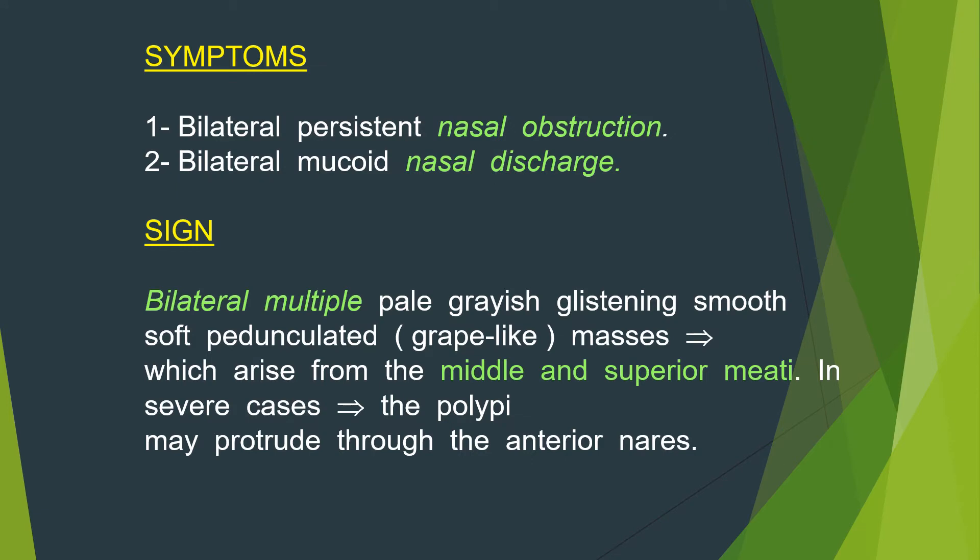Symptoms are bilateral persistent nasal obstruction and bilateral mucoid nasal discharge. By examination, we will see bilateral multiple pale grayish glistening smooth soft pedunculated grape-like masses which arise from the middle and superior meatus. In severe cases, the polypi may protrude through the anterior nares.